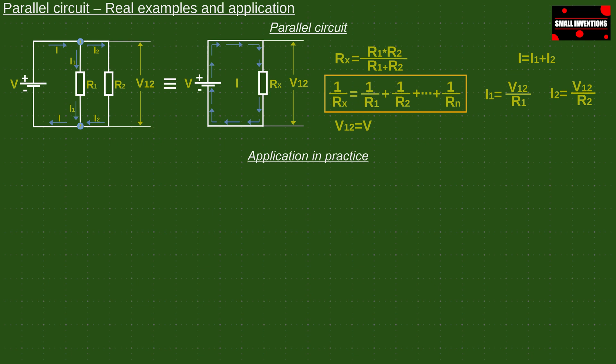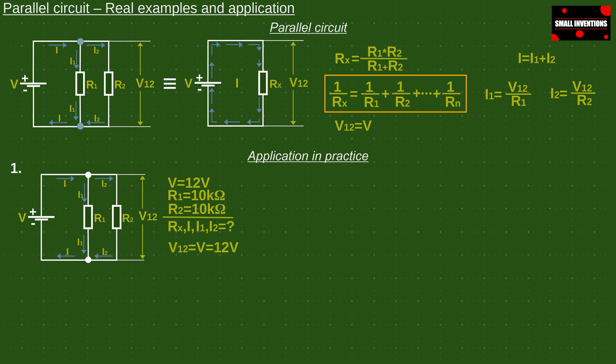Let's apply this knowledge in practice on a simple example. The supply voltage is 12 volts and the resistors R1 and R2 have values of 10 kilo-ohms. It is necessary to calculate the total resistance and all currents in the circuit.